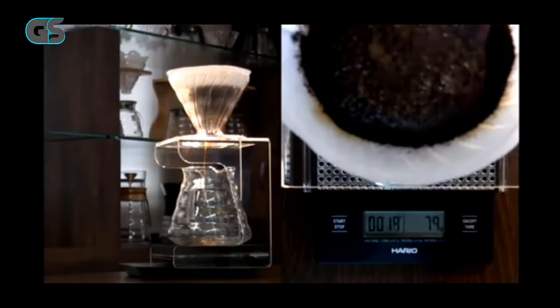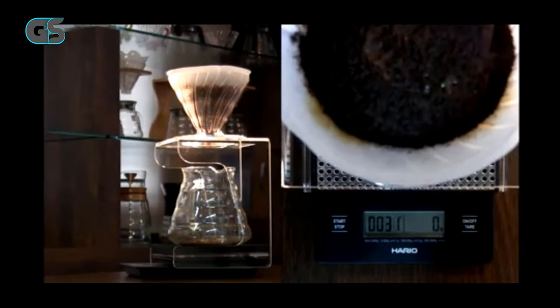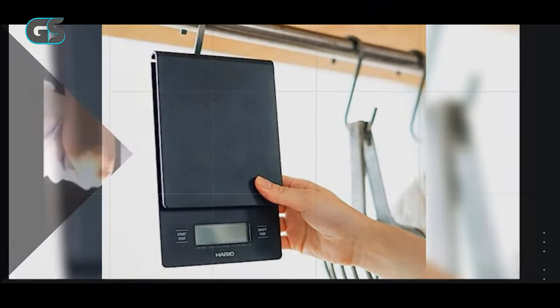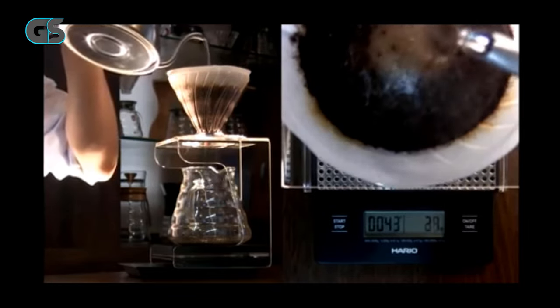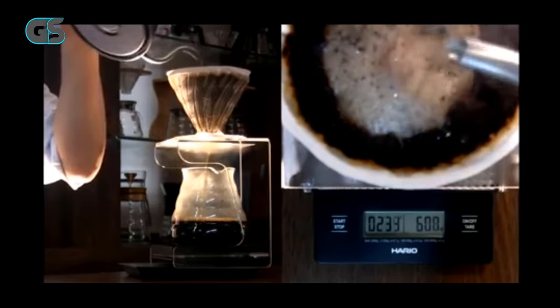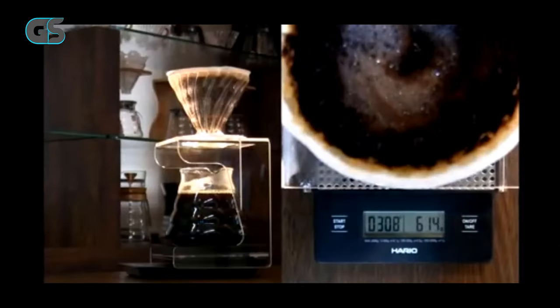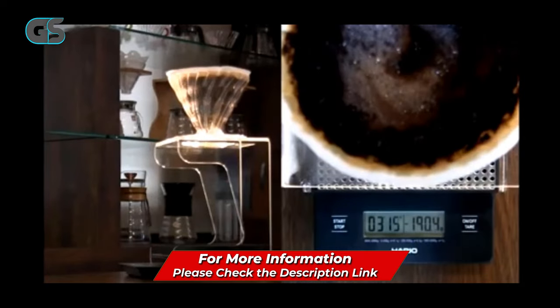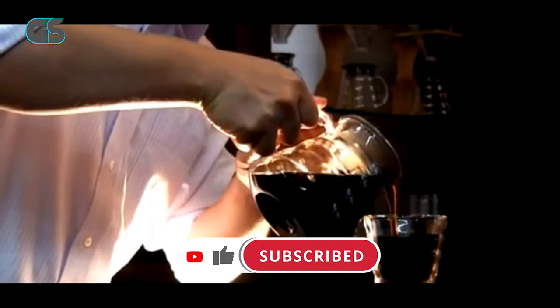One of the standout features is its versatility. Whether you're a fan of manual pour over methods like the V60 or experimenting with other brewing techniques, this scale accommodates all. The build quality is exceptional, and its durability ensures it will be a long-term companion on your coffee journey. The Herio V60 Drip Coffee Scale and Timer are a must-have for anyone seeking precision and convenience in their coffee brewing routine. Its sleek design, accurate measurements, and integrated timer make it an essential tool for achieving the perfect cup of coffee. For those who appreciate the art of pour over brewing, this scale is an investment that will undoubtedly enhance your coffee experience to a whole new level.